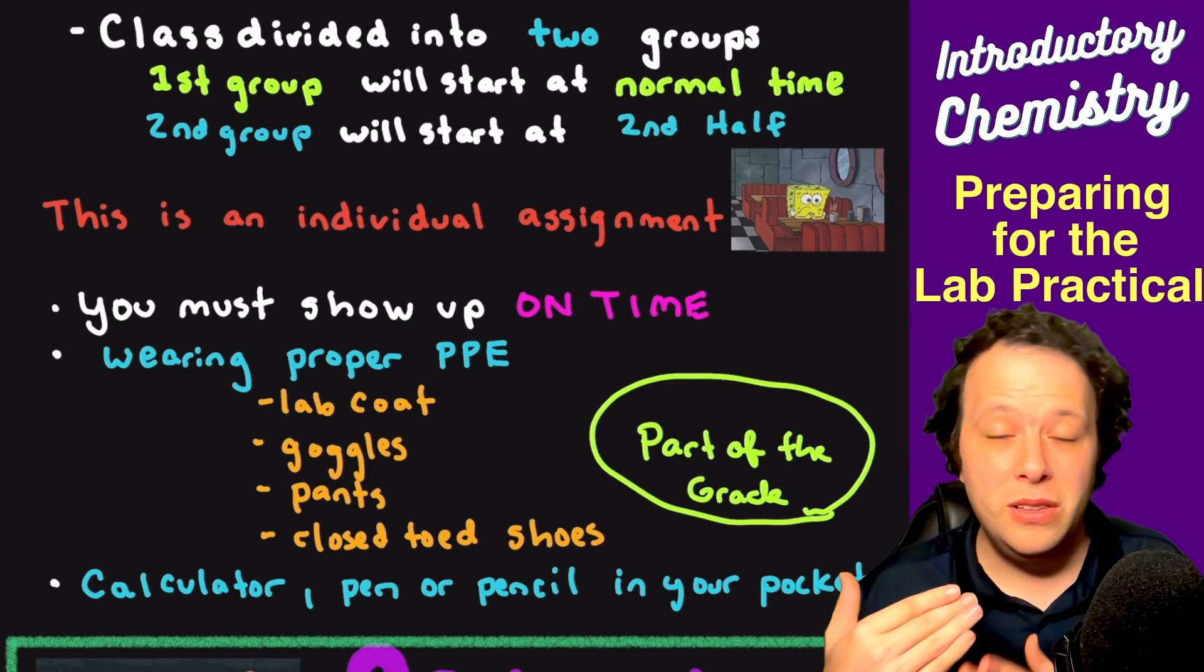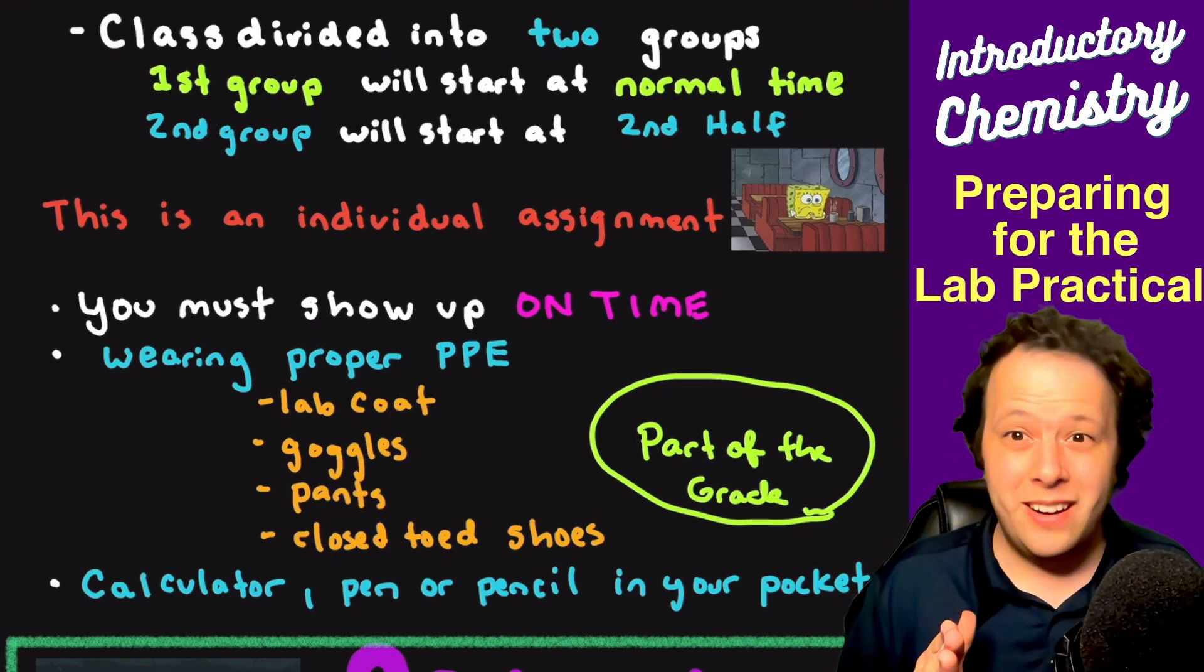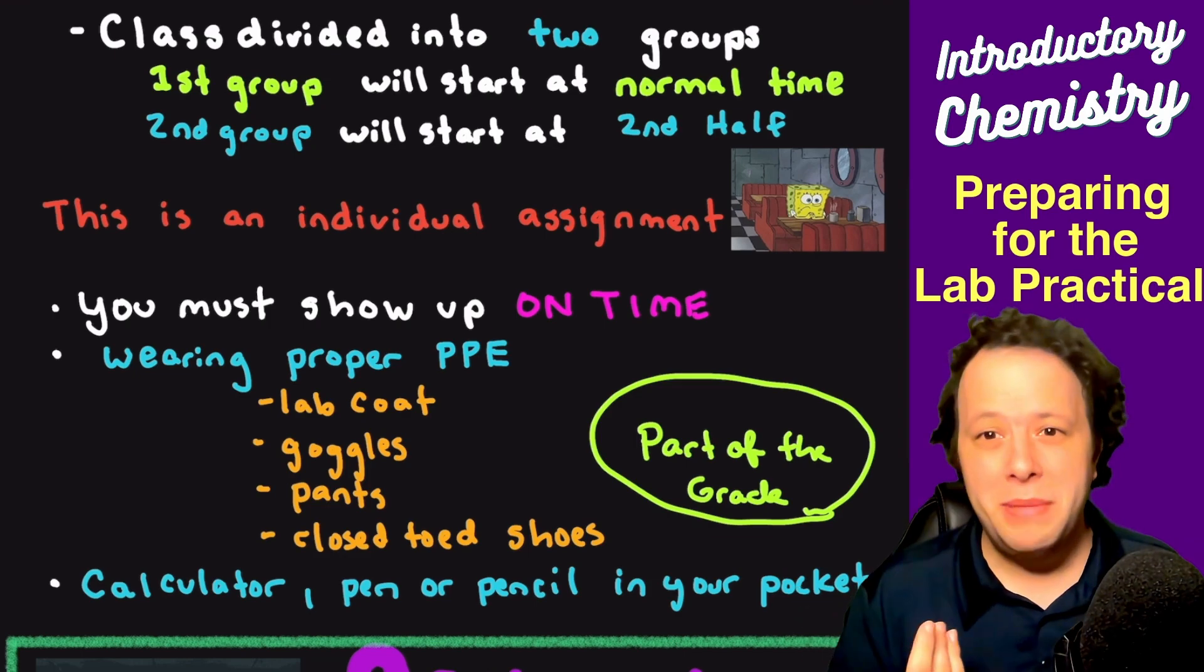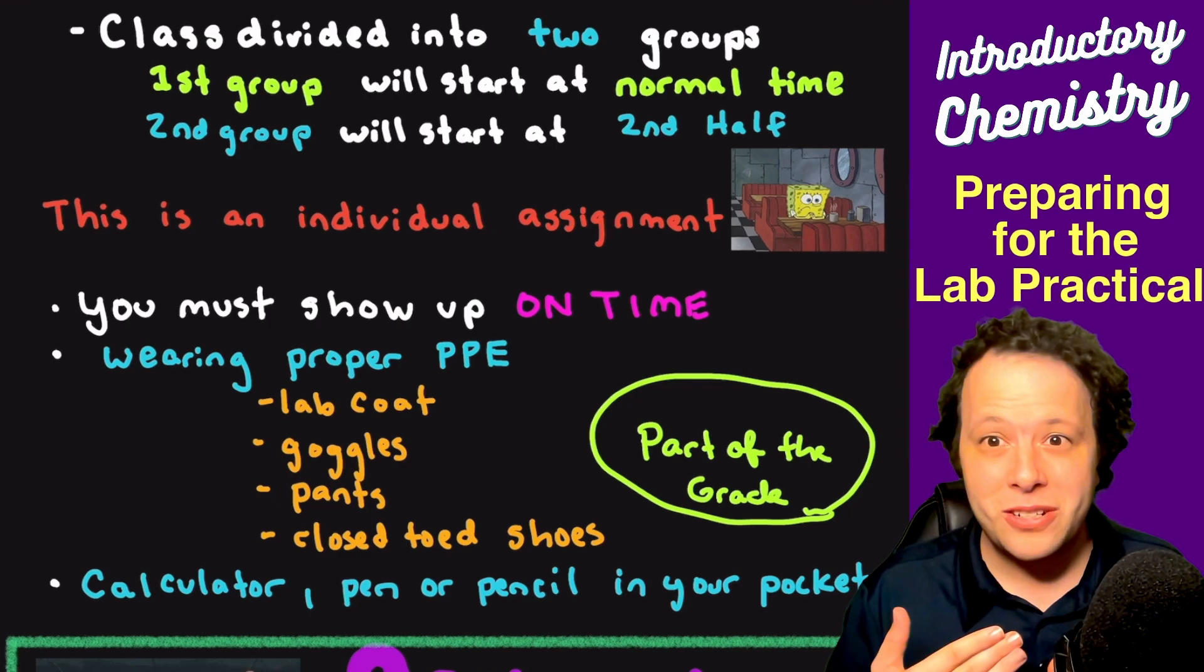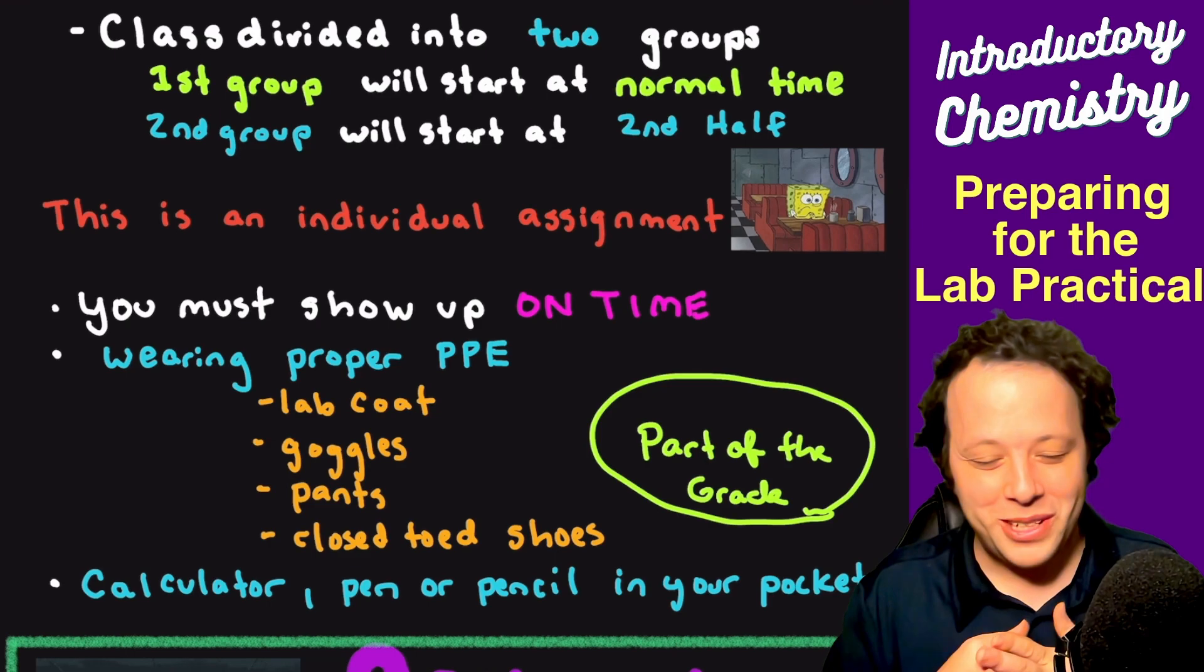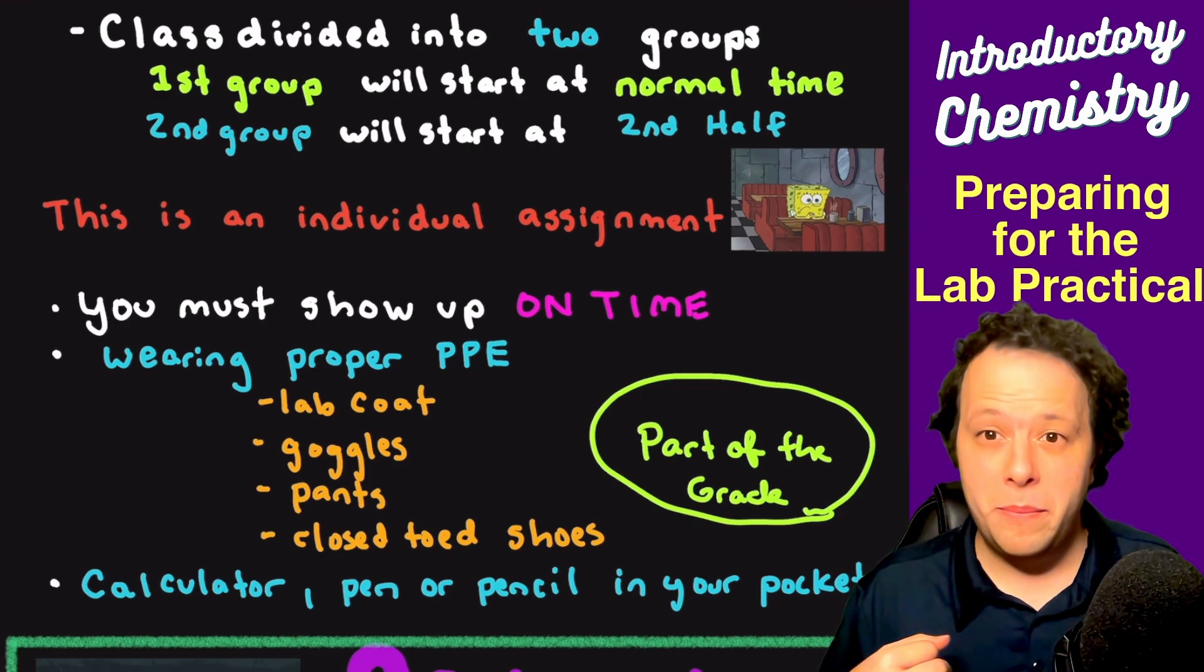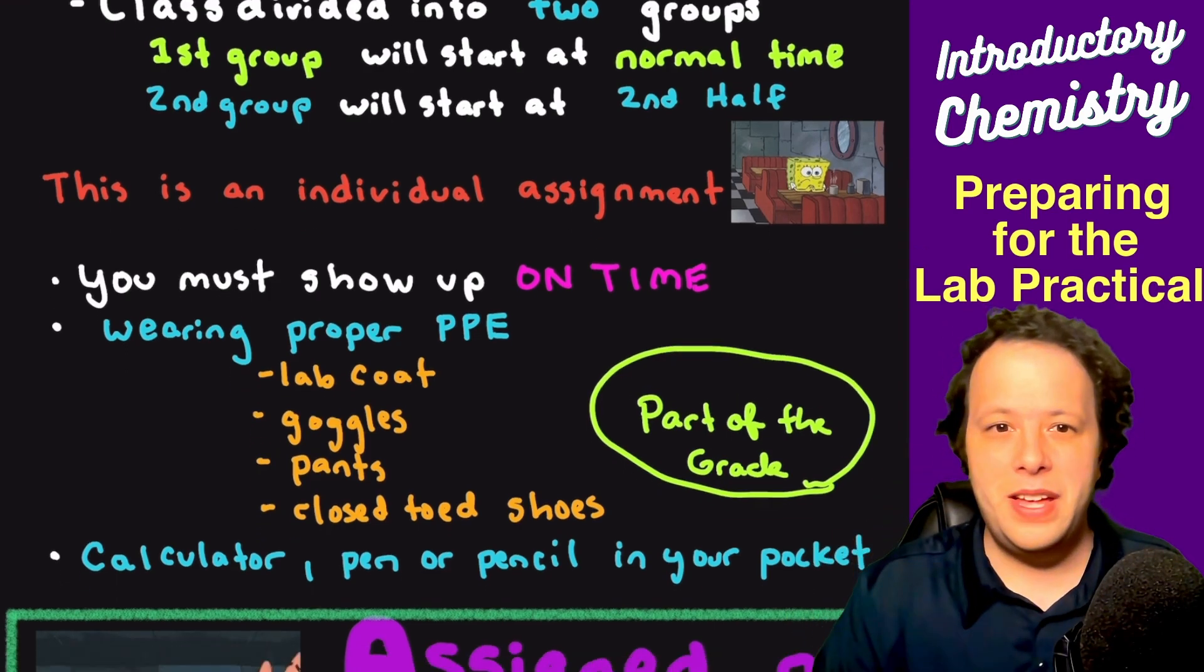This can be part of your grade. Many instructors will take off points if you're missing any of these. If you forget those things, you could lose anywhere from five percent to as much as fifty percent of the grade. Some instructors will even send you home. The night before, put extra clothes in your car if you have to. Also, in your lab coat pocket, put your calculator and a pen or pencil.